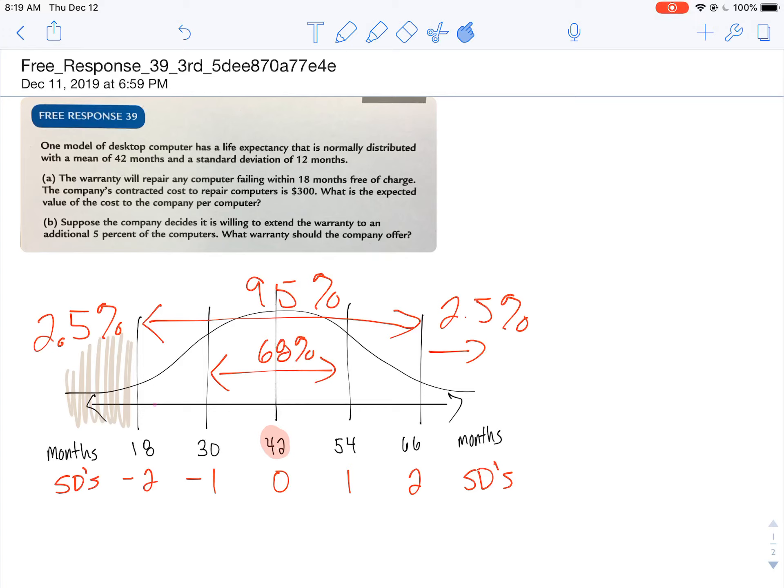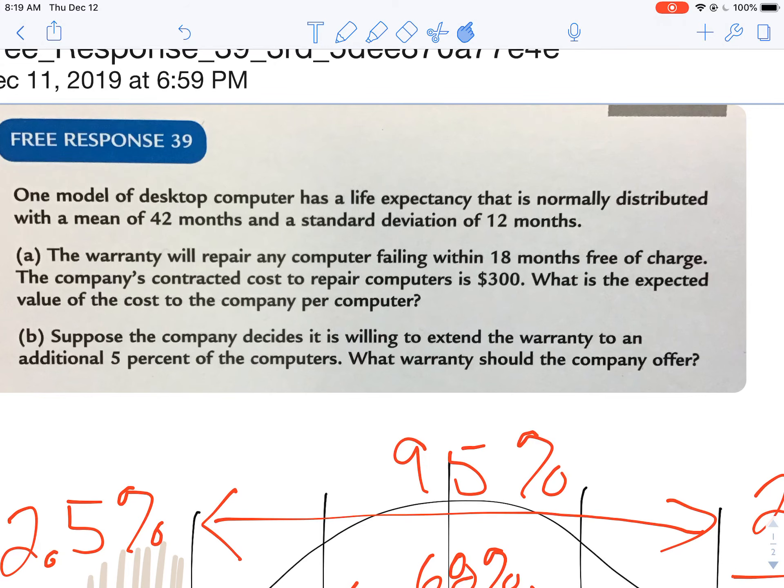It tells us that we have a model desktop computer that is normally distributed with a mean of 42 months and a standard deviation of 12 months.